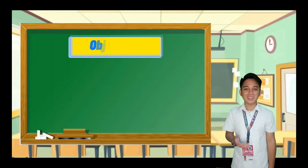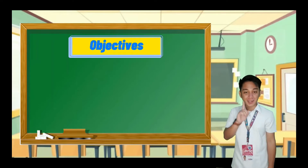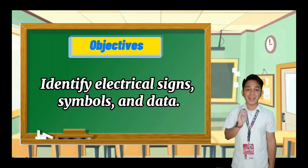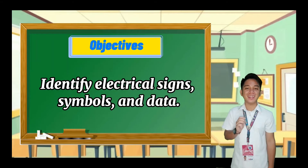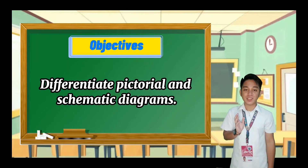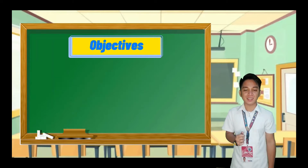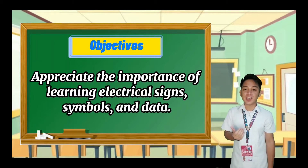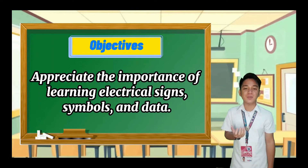The objectives in this lesson are the following. First, identify electrical signs, symbols, and data. Next, differentiate pictorial and schematic diagrams. And the last one, appreciate the importance of learning electrical signs, symbols, and data.